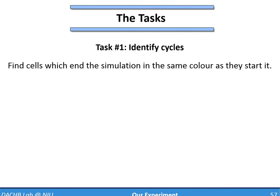The first task will be to identify cycles. That is, we will want you to show us the cells that end the simulation with the same color as they start. For example, if they start green, then at the end of the simulation, they should be green too.